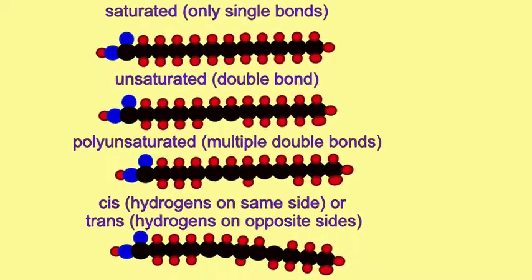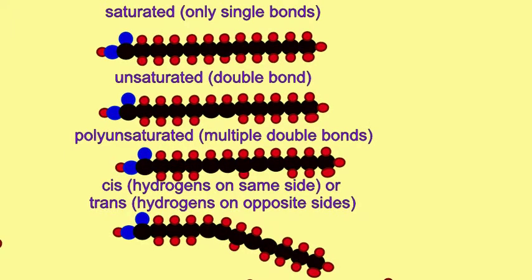Cis fatty acids put kinks in the hydrocarbon chain. Most of the unsaturated fatty acids found in nature are cis bonds, and the carbon with the double bond typically has three carbons which follow it. Trans fatty acids typically do not occur in nature, and are the result of human processing of other lipids.